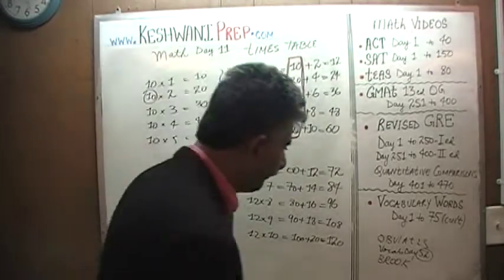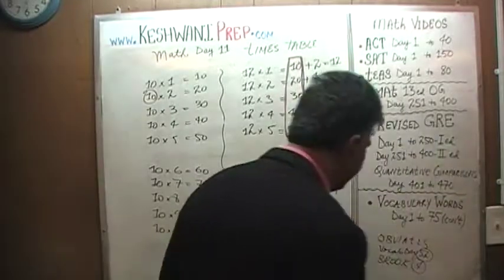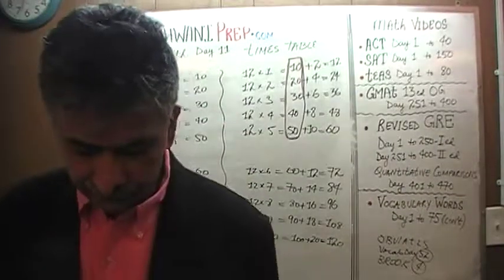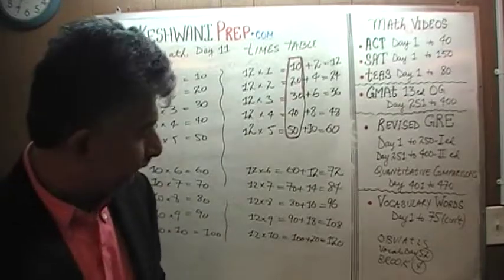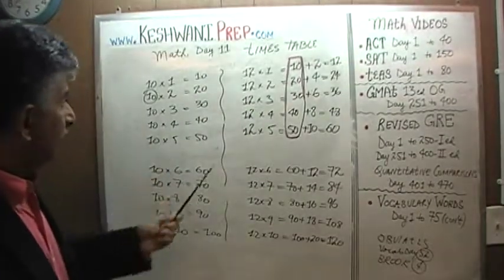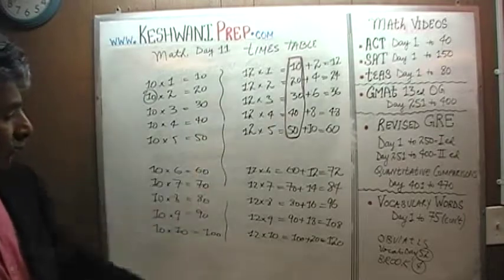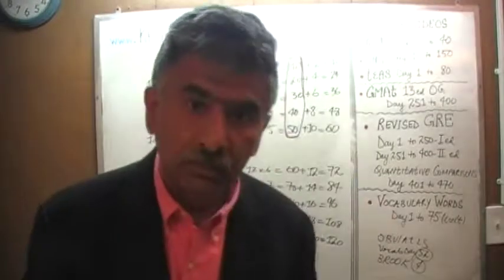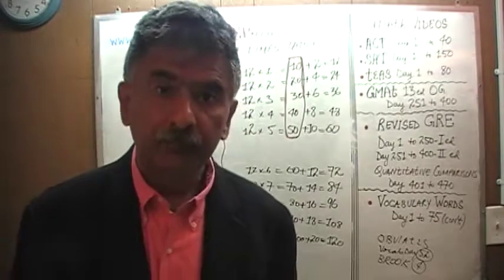Brook — day number four. Just type in 'vocabulary words day four' and learn the word. So that was it — that was the table of 11s and 12s. I will see you tomorrow. Bye now.